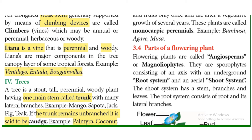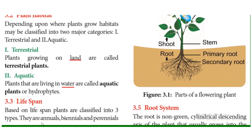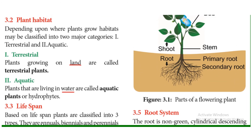So, based on habit, plants are classified as herbs, shrubs, climbers, and trees. Next is plant habitat. Depending on where plants grow, habitats are classified into two major categories: terrestrial and aquatic. Plants growing on land are terrestrial plants. Plants living in water are aquatic plants, also called hydrophytes.